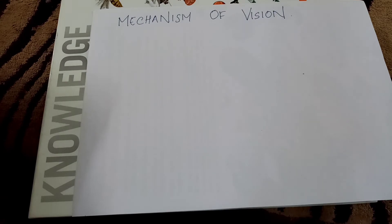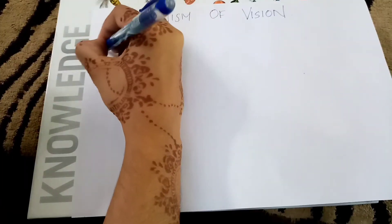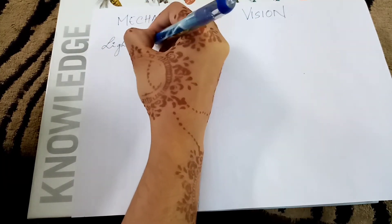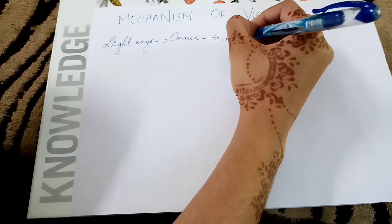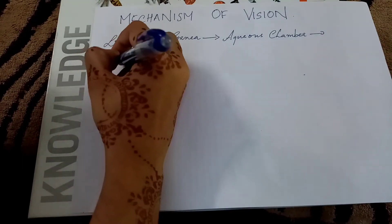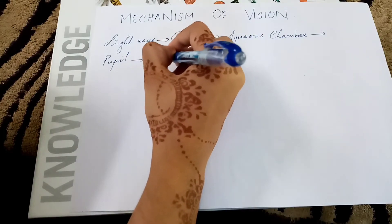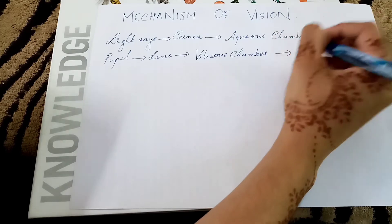Next, we are going to study about the mechanism of vision. Light rays in the visible wavelength focused on the retina through the cornea and lens generate potentials in rods and cones. We can study it through a flow chart: light rays fall on the cornea, then pass through the aqueous chamber, then through the pupil, then through the crystalline convex lens, then through the vitreous chamber, and finally reach the retina.